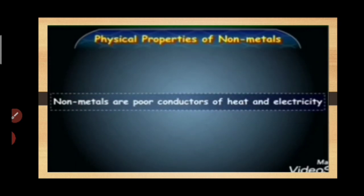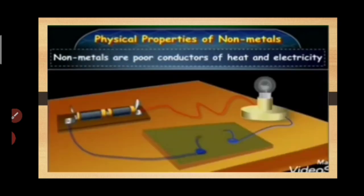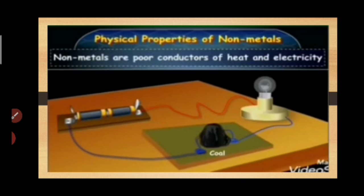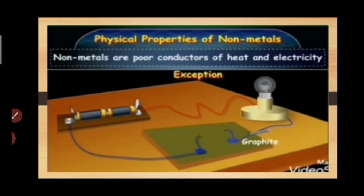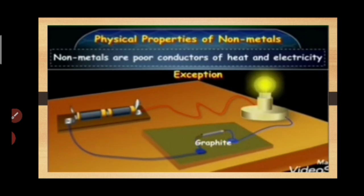Nonmetals are poor conductors of heat and electricity. In this experiment, coal has been attached to the circuit but the light didn't light up. But graphite, even though it is a nonmetal, is still a good conductor of heat and electricity.